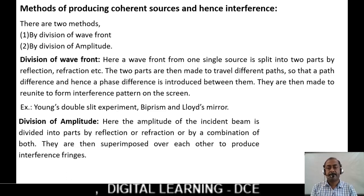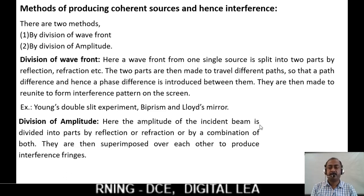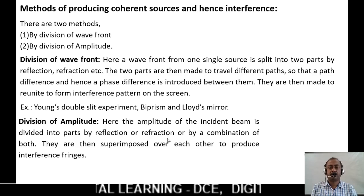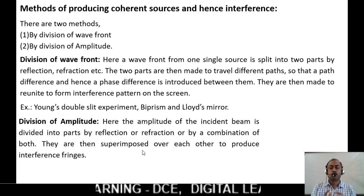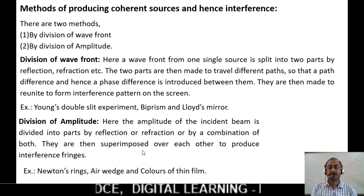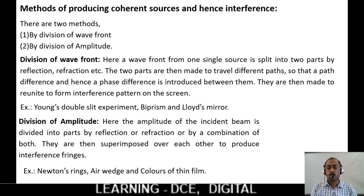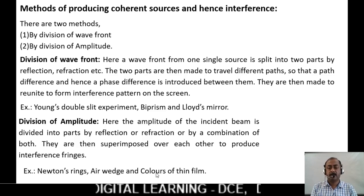The second method is by division of amplitude: the amplitude of the incident beam is divided into two parts by reflection, refraction, or a combination of both. They are then superimposed over each other to produce interference fringes. Examples for this method are Newton's rings, air wedge, and colors of thin films.